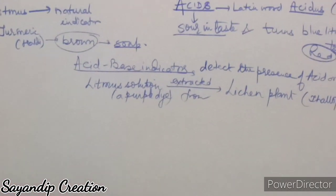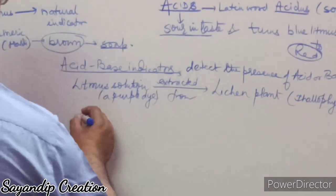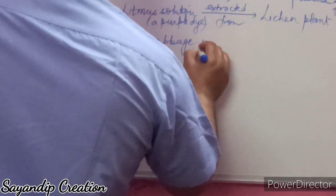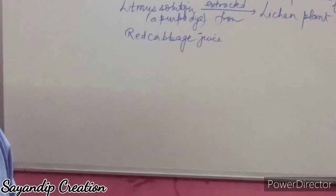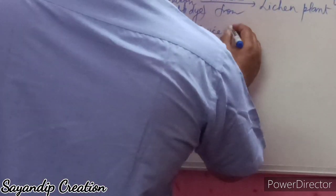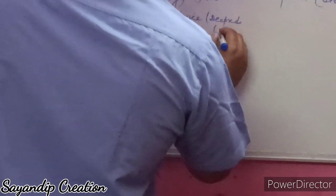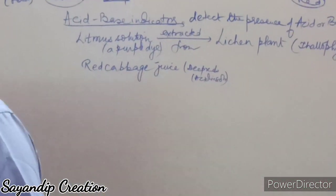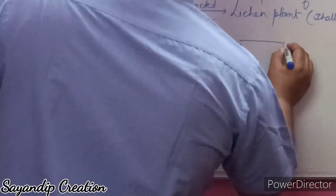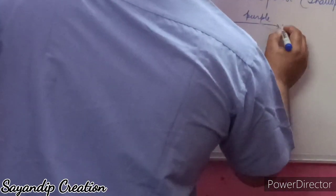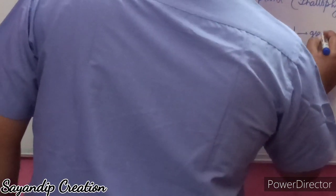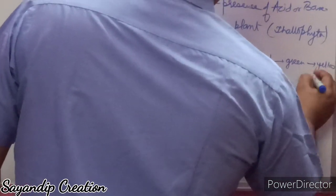Another natural indicator is red cabbage juice, which is deep red in color. In acidic solution it remains deep red, it changes to purple in neutral solution, and it changes to yellow (then green) in a strongly basic solution.